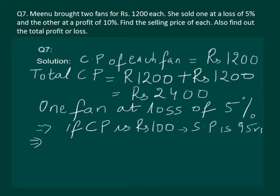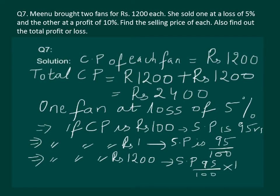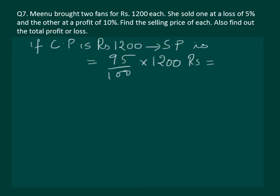If cost price is rupees 1, then sale price is 95/100 rupees. Since the actual cost price is rupees 1200, the sale price would be 95/100 multiplied by 1200. On calculating, we get rupees 1140. So the sale price of the first fan is rupees 1140.